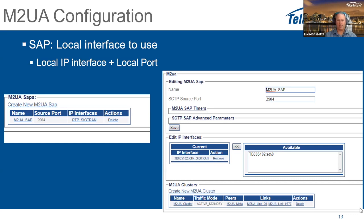Once the M2UA envelope is configured, you configure service access points — the local interface to send and receive M2UA traffic. Typically only one service access point is needed, but multiple are supported. It is defined by the local IP interface, VLAN, physical port, and the local port number. The default M2UA port is 2904, and it's fine to use this default. This is the source port where you initiate the connection. Timers and SCTP advanced parameters generally do not need to be changed.